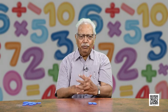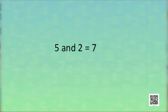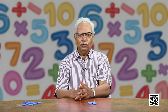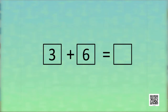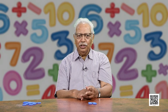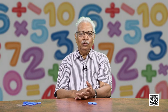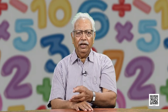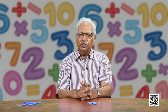Now instead of pictures, we are just going to use numbers. For example, 5 and 2 equal to 7, or we can say 5 plus 2 equal to 7. Now we are going to look at the symbols and the numbers. 3 plus 6 equal to what? Here, what you can do is count forward from 3 up to 6 times and see what comes. So, 3 add 1 is 4, 5, 6, 7, 8, and 9. So, 3 and 6 equal to 9 will be the answer.